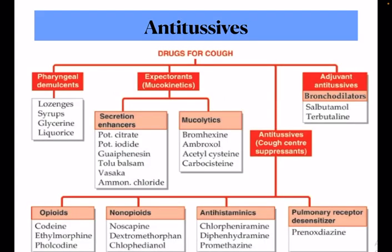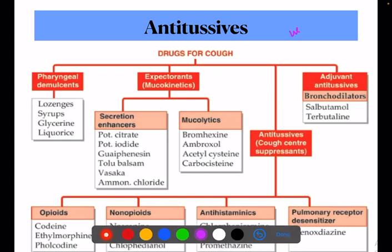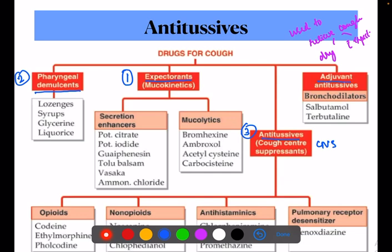Next classification is antitussives. Antitussives are any drugs used to relieve cough — whether dry cough or productive cough with expectorants. The classification includes: first, expectorants; second, pharyngeal demulcents; third, antitussives acting on the CNS; and fourth, adjuvant antitussives.